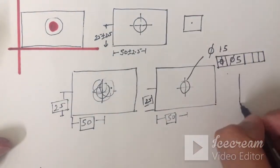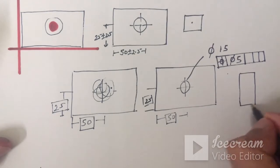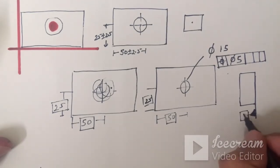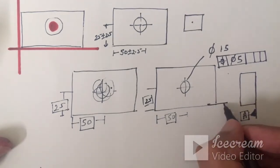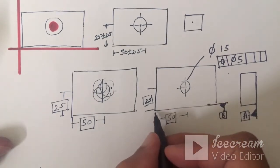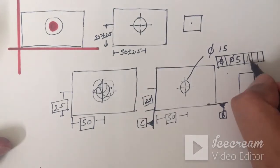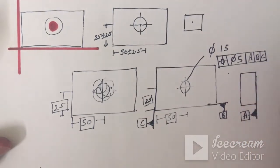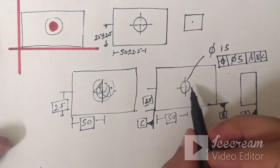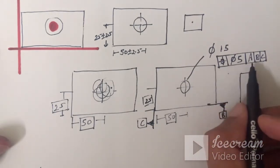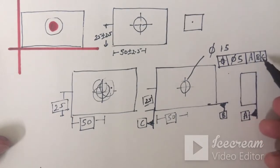Looking at the right side view of this block, first of all this face has to be aligned into the reference frame — this is datum A. This is datum B, and this is datum C. I will put these datums here: A, B, and C. That means this hole can now be positioned within a 5 mm diametrical zone with respect to datum A, B, and C.